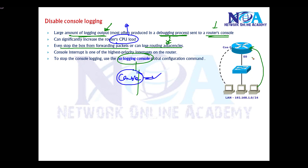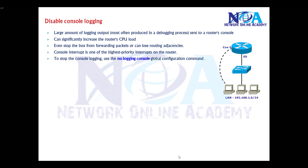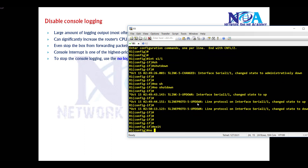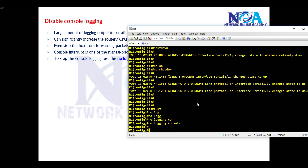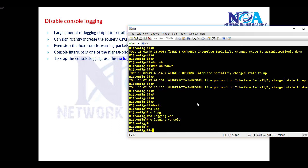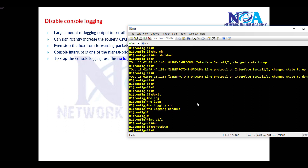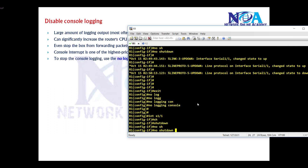In production networks, we mostly access devices via Telnet or SSH remotely and only use console for major issues like password recovery or when unable to log in via VTY. So it's recommended to disable the console messages using 'no logging console'. Once disabled, if I make changes on the network — let's say an interface goes down — you won't see any log messages displayed on the console.